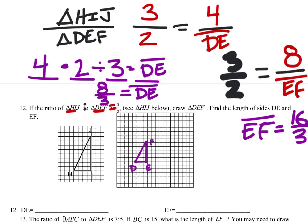So the reason we know that the triangle we're drawing is smaller is because HIJ is in the same position as the 3 in the ratio. DEF is in the same position as the 2. 2 is smaller than 3, so we know this new triangle DEF will be smaller.